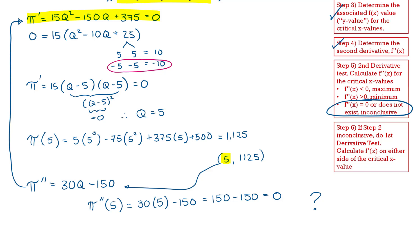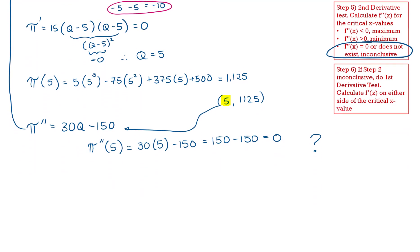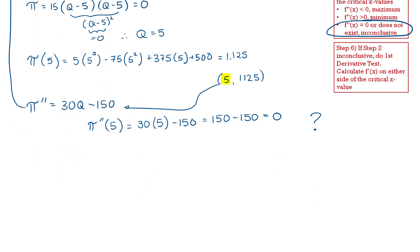We don't often use it, but we have a step 6 for this exact situation — the first derivative test. When I do the first derivative test, I have a critical point at q equals 5. I'm going to choose a value below q equals 5 and a value above q equals 5, and calculate the first derivative to examine the slope.